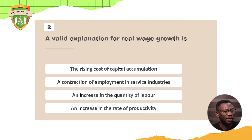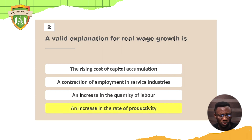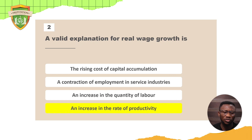Question two: a valid explanation for real wage growth is — the rising cost of capital accumulation, the contraction of employment in service industries, an increase in the quantity of labor, or an increase in the rate of productivity? The answer is an increase in the rate of productivity. How productive you are determines how your wage rate will grow. Think about footballers — they score more goals, they get paid more. The more productive you are, the more income you get.